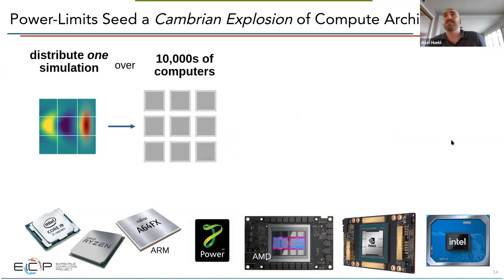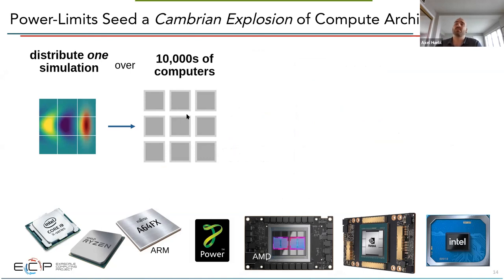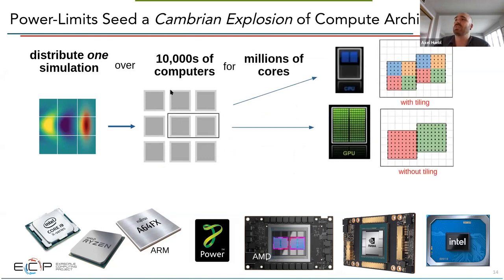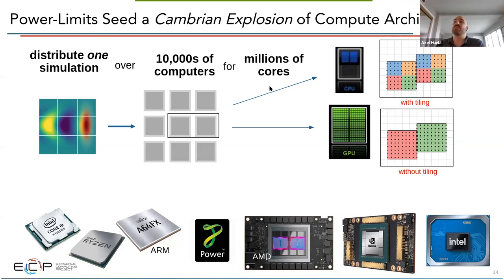For us as modelers, this means distributing simulations over more and more logical and physical computing units. We take our simulation domain and cut it into pieces — a domain decomposition — at multiple levels: first across tens of thousands of nodes on a supercomputer, with communication regions between neighboring domains, then across CPU cores or thousands of GPU threads within each node. For a full supercomputer, we're talking about millions of cores to program in total, using vectorization strategies for CPUs and large block-style parallelization for GPUs.